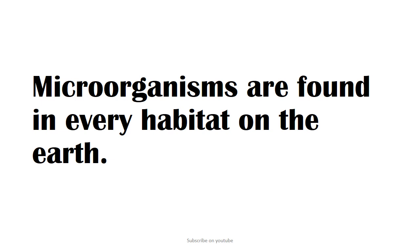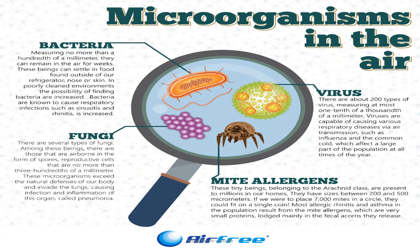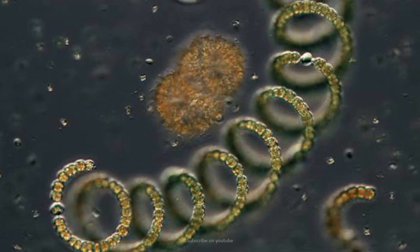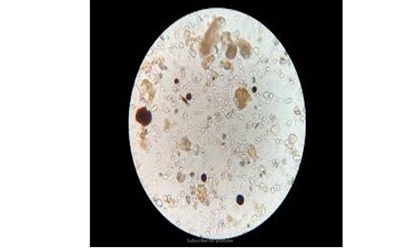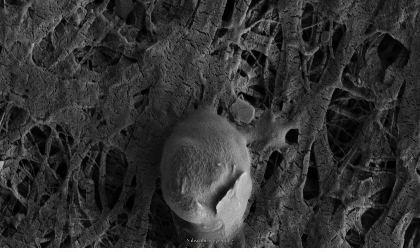Microorganisms are found in every habitat on the Earth. They live in all environments such as the atmosphere — this is a picture of microorganisms which we can observe in air — in water, in soil. Let's see some microorganisms which we can observe in hostile environments like glaciers — this is the microorganism we can observe in glaciers.